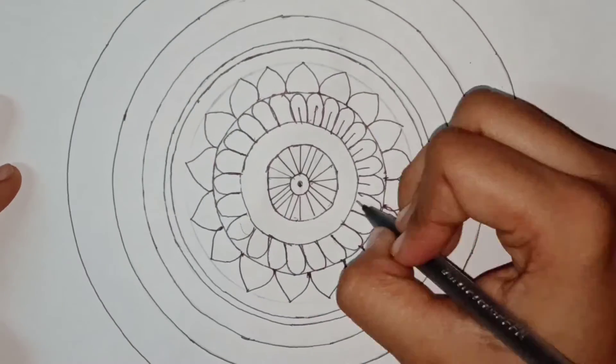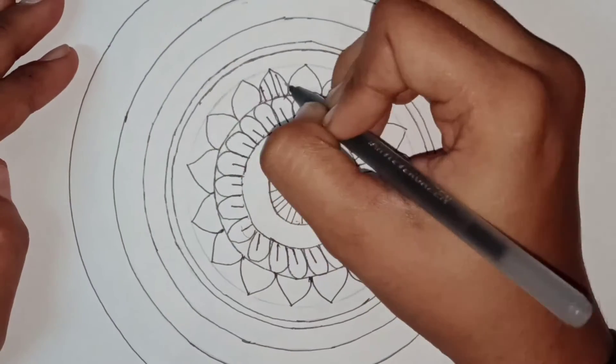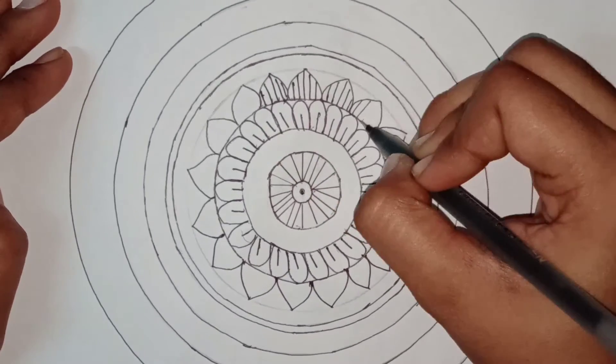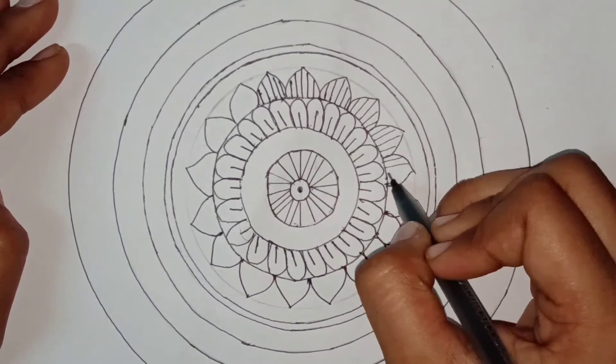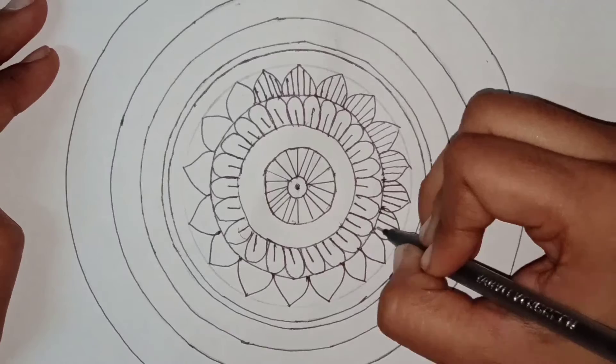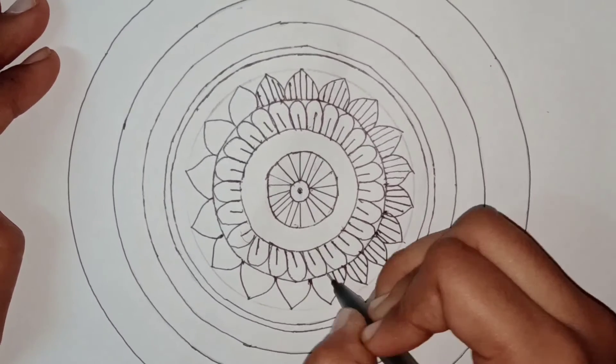As we have made our first two designs, now it's time to fill them with simple lines. It's very easy - you can use a scale for it. As I've shown, you have to draw like that. It will look amazing.